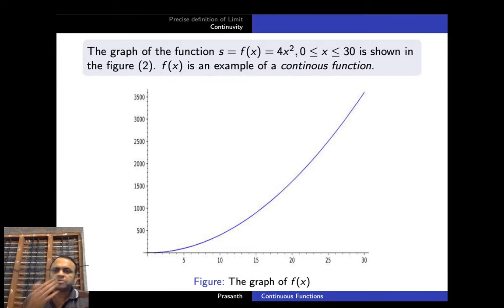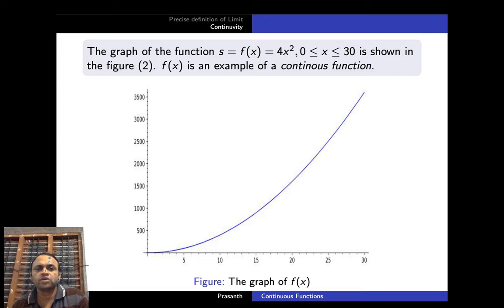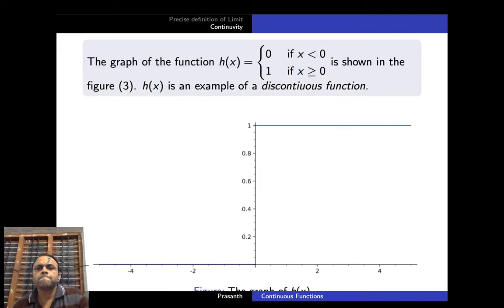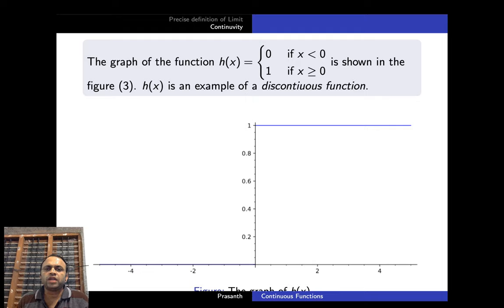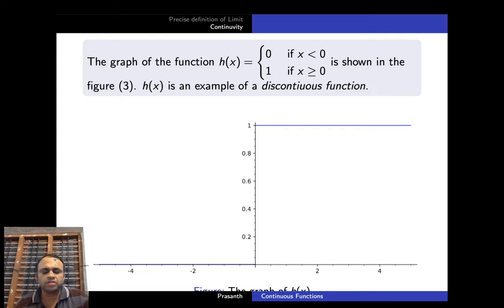Now we will move to the concept of continuity. Consider the graph of f(x) = 4x² for 0 ≤ x ≤ 30. This function from 0 to 30 is without any break — it moves higher as x becomes larger. But consider h(x) = 0 for x < 0 and h(x) = 1 for x ≥ 0. You can see that there is a break at x = 0. Therefore this function is an example of a discontinuous function.